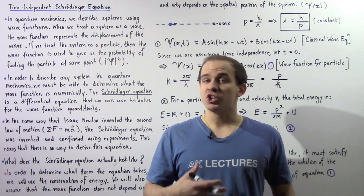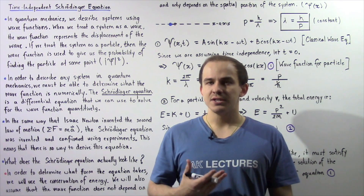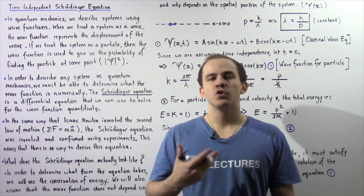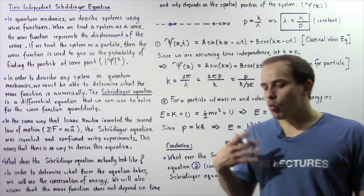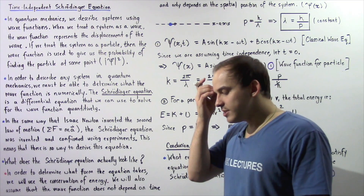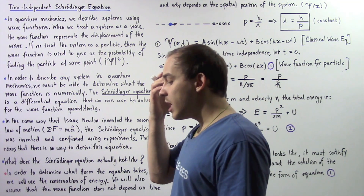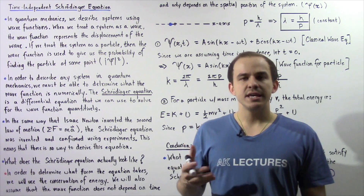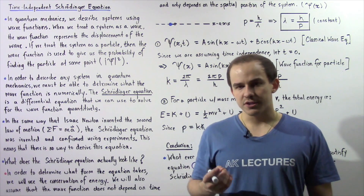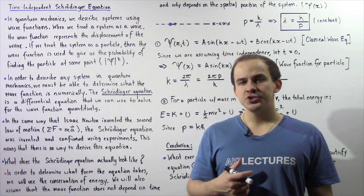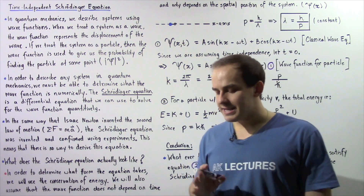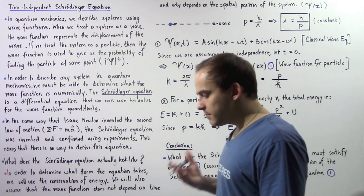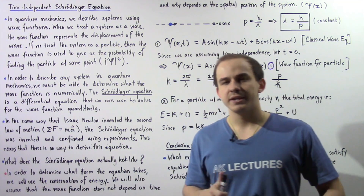In this lecture, we're going to discuss the famous and important Schrödinger equation of quantum mechanics. What exactly is this equation, where does it actually come from, and what important information does it provide us with? These are some of the questions we're going to discuss. Let's begin by recalling a very important principle in quantum mechanics.